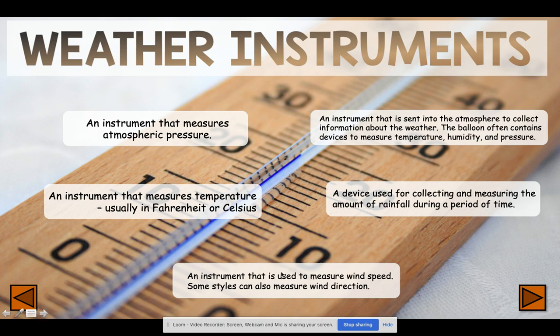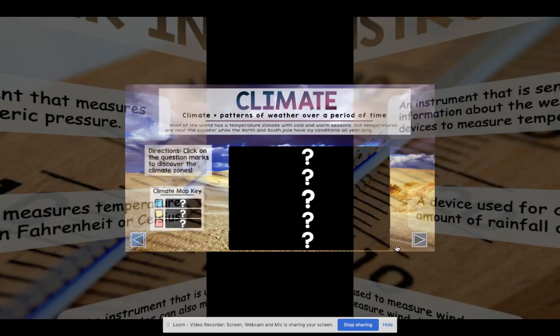Then we have an anemometer, which is an instrument that measures wind speed. There are different styles of them — a basic one will just measure wind speed, and then there are others that will also measure the direction the wind is coming from. If you need to, go ahead and pause this video and copy down what all these wonderful instruments are meant for in your interactive notebook.